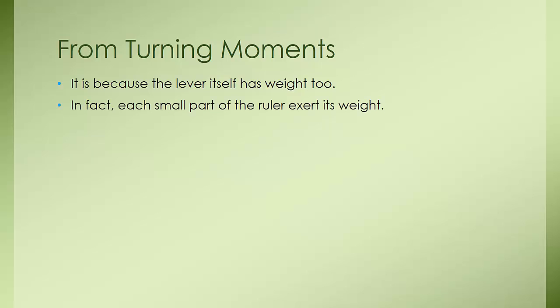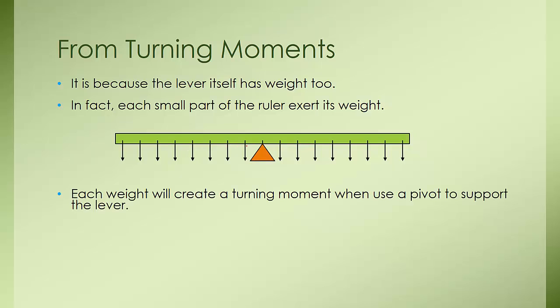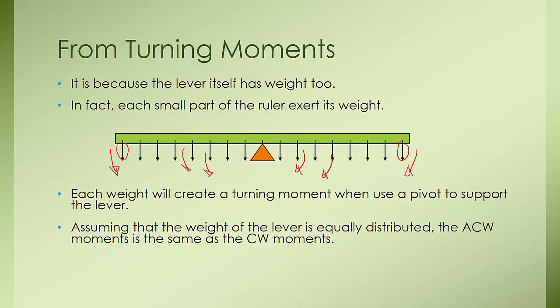Each small part of the ruler actually exerts its own weight. So if you place the support right at the center, each weight will create a small turning moment. This one will create an anticlockwise moment and this one will create a clockwise moment, and each part creates its own turning moments. If you place the pivot at the center, each one will be balanced by an opposite turning moment. We are assuming the weight of the lever is equally distributed, so the anticlockwise moment equals the clockwise moment and the lever is balanced.